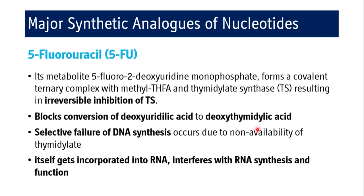5-Fluorouracil is a pyrimidine antagonist. Its metabolite 5-fluoro-2-deoxyuridine monophosphate forms a covalent ternary complex with methylenetetrahydrofolate and thymidylate synthase, resulting in irreversible inhibition of thymidylate synthase. This blocks the conversion of deoxyuridylic acid to deoxythymidylic acid, causing selective failure of DNA synthesis due to lack of thymidylate. It also gets incorporated into RNA, interfering with RNA synthesis and function — giving it a dual mode of action.